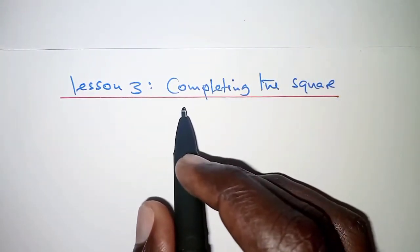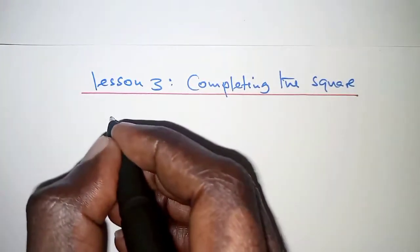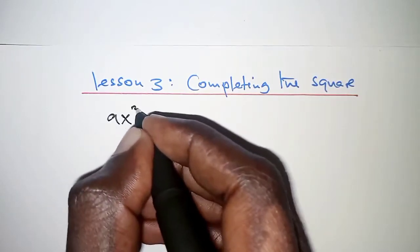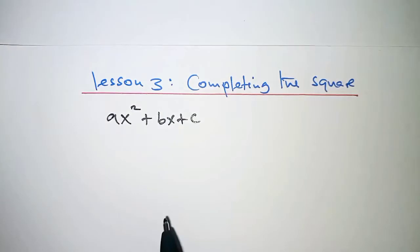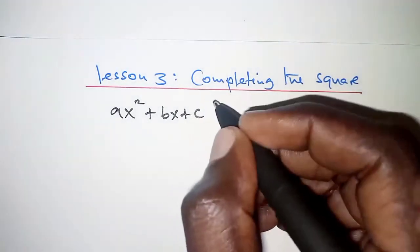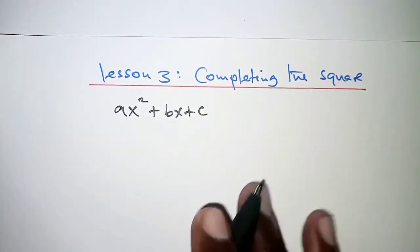In our previous lesson we looked at perfect squares and we saw that given a quadratic expression ax² + bx + c, then the quadratic expression can either be a perfect square or not a perfect square. And if it is a perfect square,